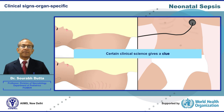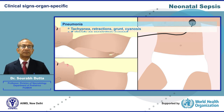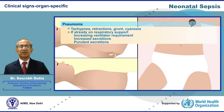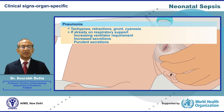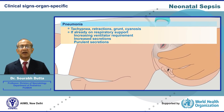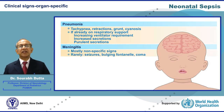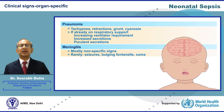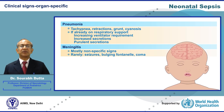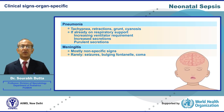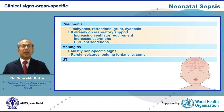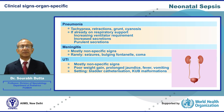Certain clinical signs give clues regarding organ localization. Tachypnea, retractions, grunt and cyanosis suggest pneumonia. For patients already on respiratory support, an increase in ventilator requirements, increased secretions, and the appearance of purulent secretions indicate ventilator-associated pneumonia. Meningitis is an important and common complication of Sepsis, but unfortunately most cases present with nonspecific signs. Rarely, the presence of seizures, bulging fontanel and coma may point towards meningitis. Urinary tract infections also present mostly with nonspecific signs; difficulty during micturition is unreliable in newborns as most normal newborns also cry during micturition.